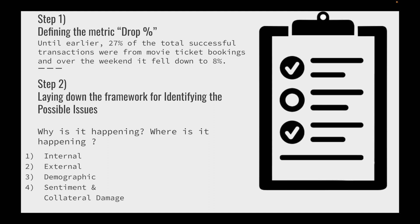Let's put down a framework for identifying possible issues. You're going to ask yourself why is it happening and where is it happening. For the 'why,' it could be an internal issue within Paytm, an external issue, a demographic issue specific to some city or region, or sentiment and collateral damage. These four topics will cover almost every possible issue that could have happened.